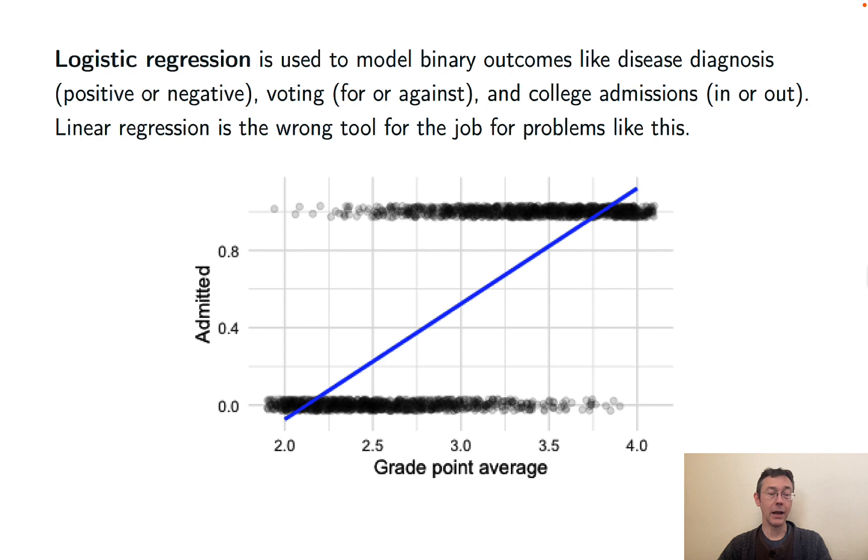Here's a typical plot. You've got a bunch of students with different GPAs, in this case ranging from about 2 to about 4. Some get in, some don't. Students with higher GPAs tend to get in at a higher rate than those with lower GPAs.